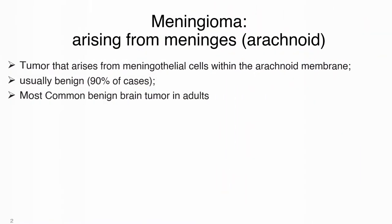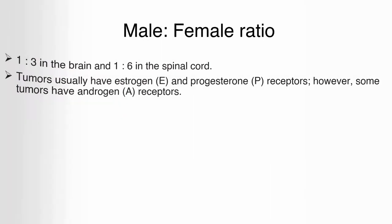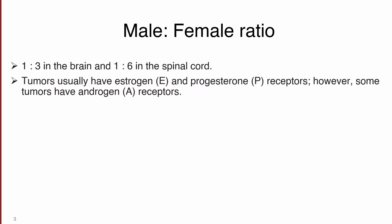Meningiomas are benign tumor cells of the arachnoid matter, arising mostly at the dural reflections of the brain, and they are the most common benign brain tumor in adults. Regarding male to female ratio, they have a 1:3 ratio when present within the brain and around 1:6 when present in the spinal cord. Meningiomas express receptors for estrogens — and sometimes for progesterone and androgen — which explains the strong female predominance.